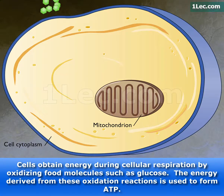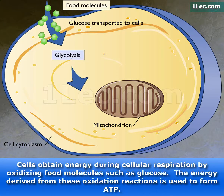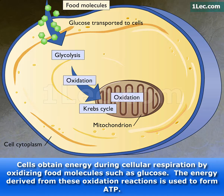Cells obtain energy during cellular respiration by oxidizing food molecules such as glucose. The energy derived from these oxidation reactions is used to form ATP.